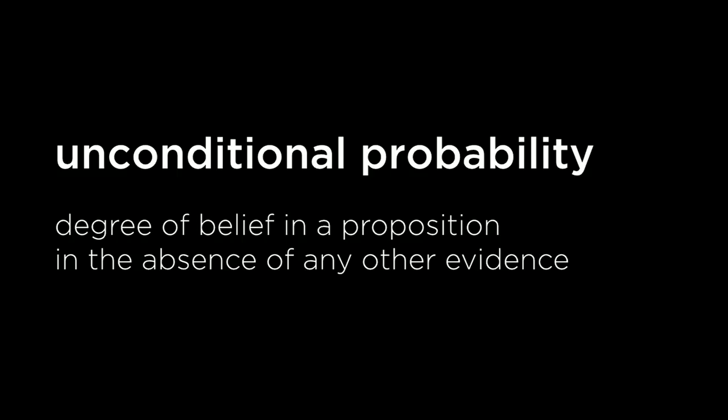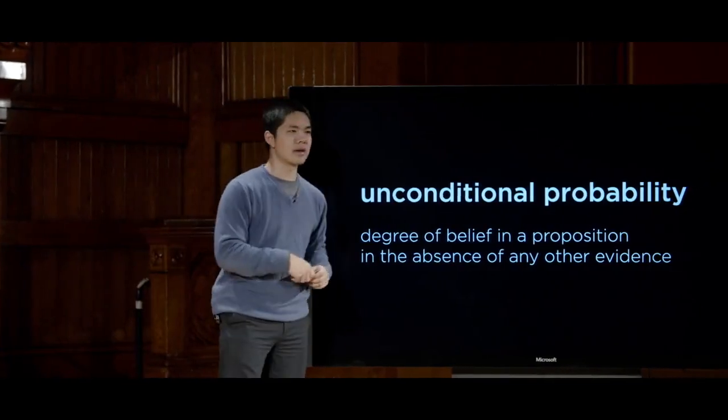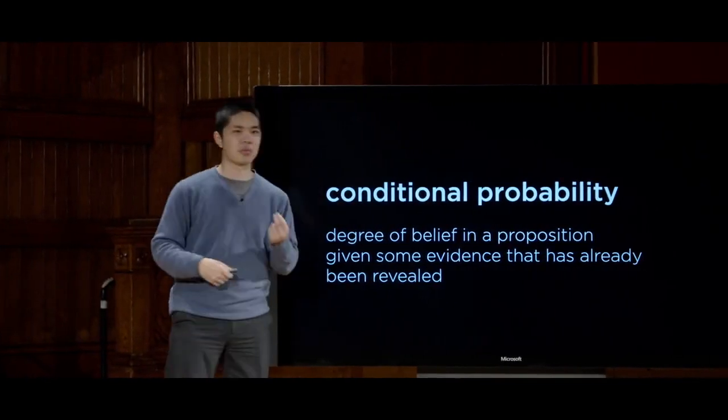These judgments — figuring out in the abstract what is the probability that something takes place — are called unconditional probabilities: some degree of belief in a proposition in the absence of any other evidence. Without knowing anything additional, if I roll a die, what's the chance it comes up as a 2? Or if I roll two dice, what's the chance the sum is 7? But usually when thinking about AI, it's not unconditional probability we're dealing with, but rather conditional probability.